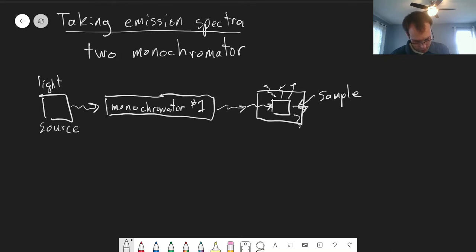And we pick one of those directions, a direction that's 90 degrees to the light coming in, and send that light through our second monochromator. We often collect this with a lens or something like that, and then that gets sent onto our detector.